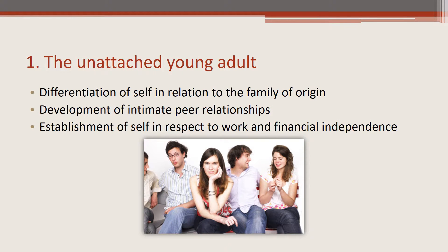In stage one, the unattached young adult, the major tasks are the selection of a way of life and the selection of a partner. One emotional task is differentiation from parents. In this stage, there is differentiation of self in relation to the family of origin, the development of intimate peer relationships, and the establishment of self in respect to work and financial independence.